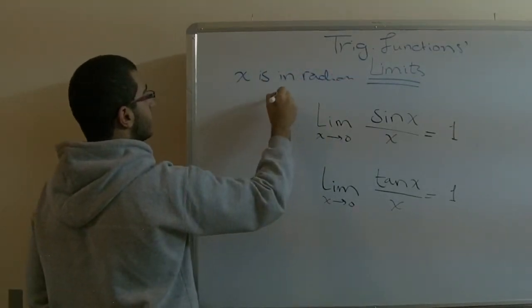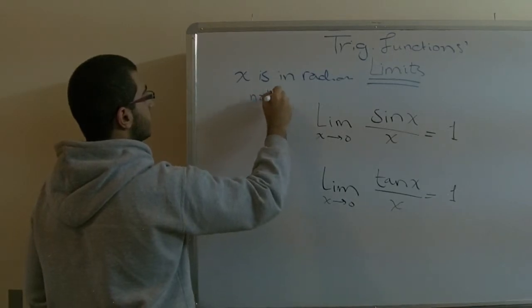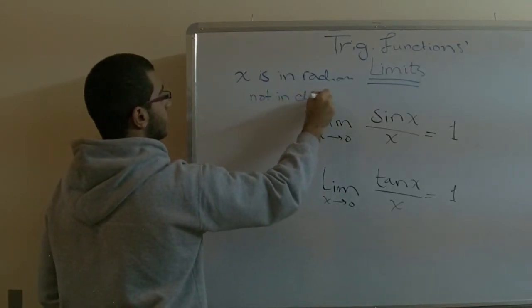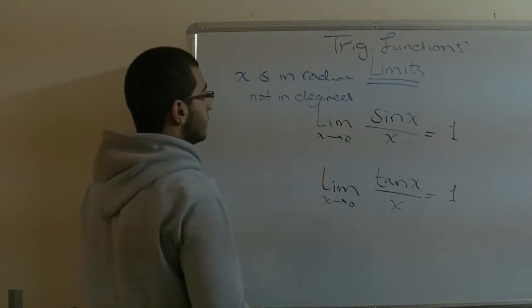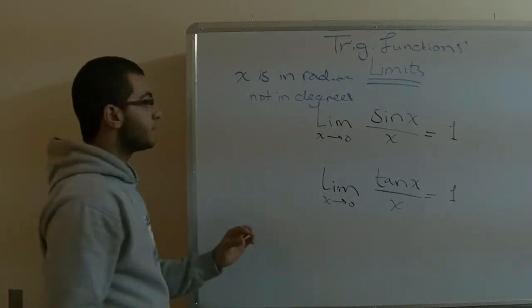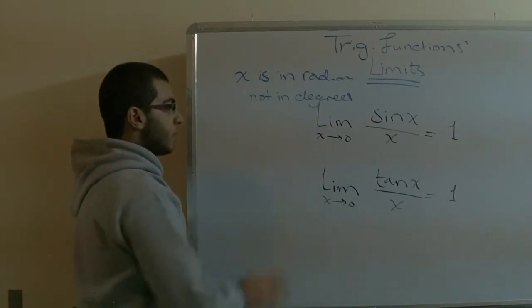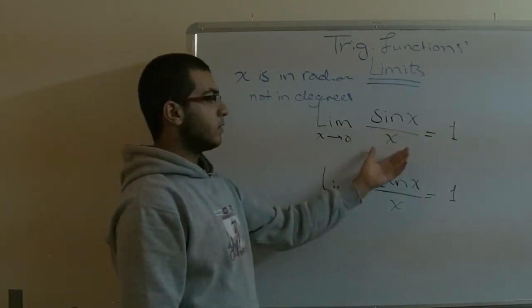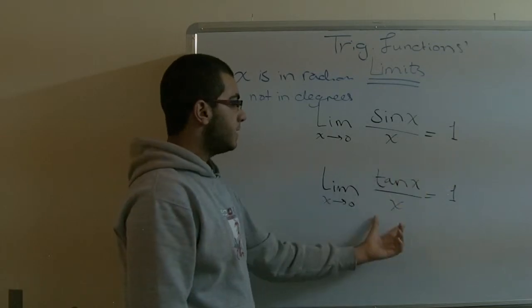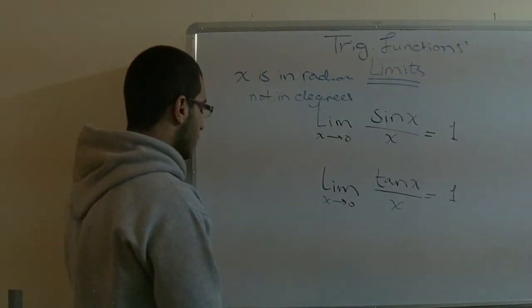Not in degrees, because radians are small numbers you can divide easily. This is the rule: sine x over x gives us 1, and tan x over x also gives us 1.